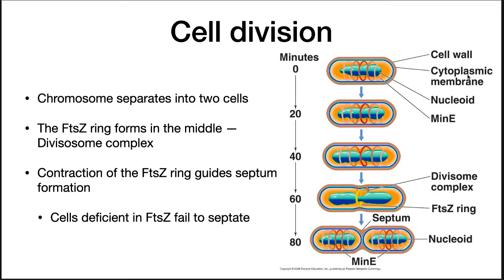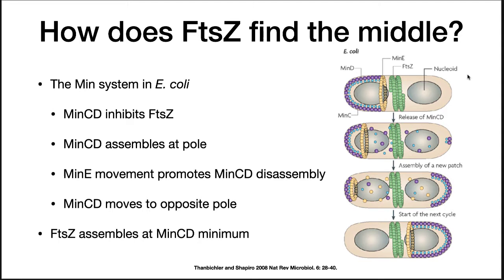Cells that are deficient in FTSZ fail to septate and will form long filaments. How does the FTSZ protein find the middle of the cell? The mechanism varies between species. Here we talk about the well-studied example of E. coli. The min system is composed of three proteins: MinC, MinD, and MinE. MinC and MinD form a complex, initially starting at the poles just under the surface of the membrane and building toward the middle. MinE actively dissipates the MinC/D complex.